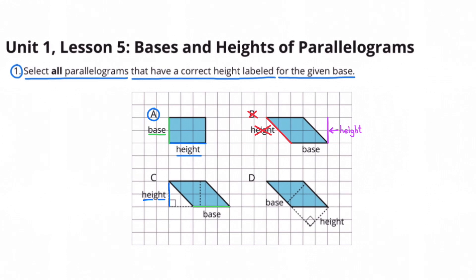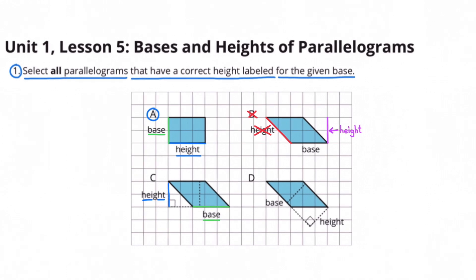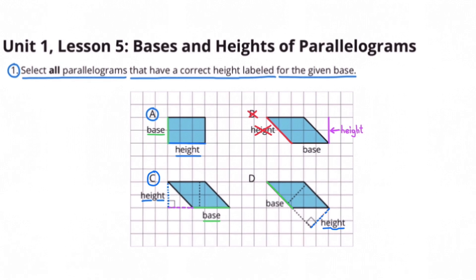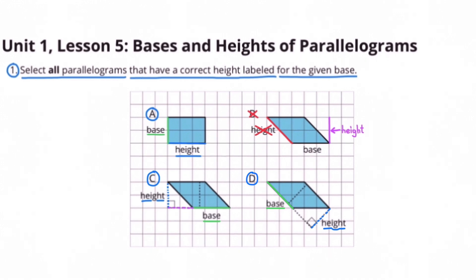Figure C: They've labeled the base and the height, and you'll notice that the height is at a 90 degree angle compared to the base. Figure D: They've labeled the height and the base, and the height is at a 90 degree angle compared to the base.